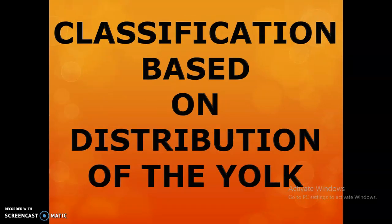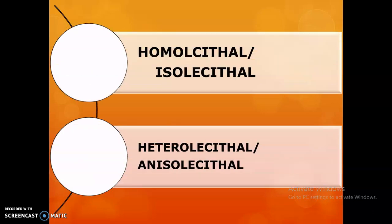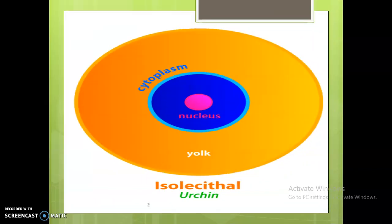Now, the classification based on distribution of yolk. We have two categories: homolecithal or isolecithal, and heterolecithal or anisolecithal. Homolecithal eggs have yolk uniformly distributed in the cytoplasm; in such eggs, cleavage is deeper and may bisect the egg connecting the two poles. All microlecithal eggs exhibit isolecithality.